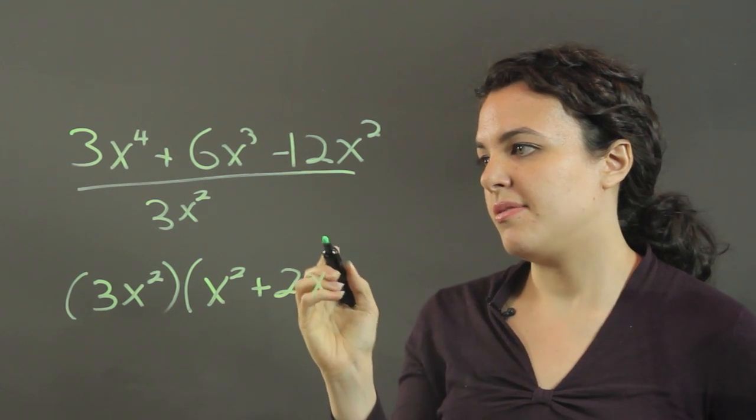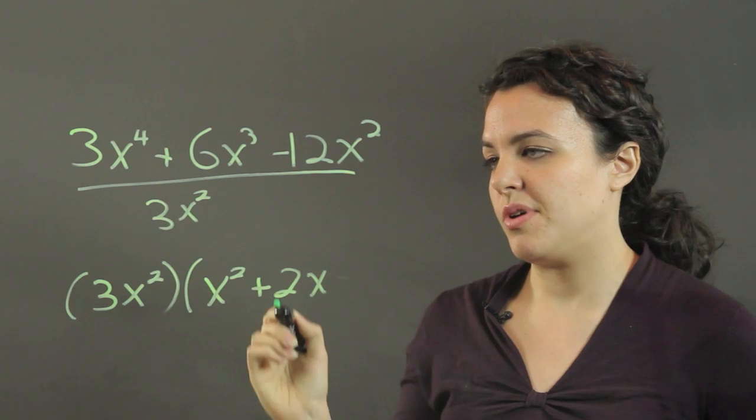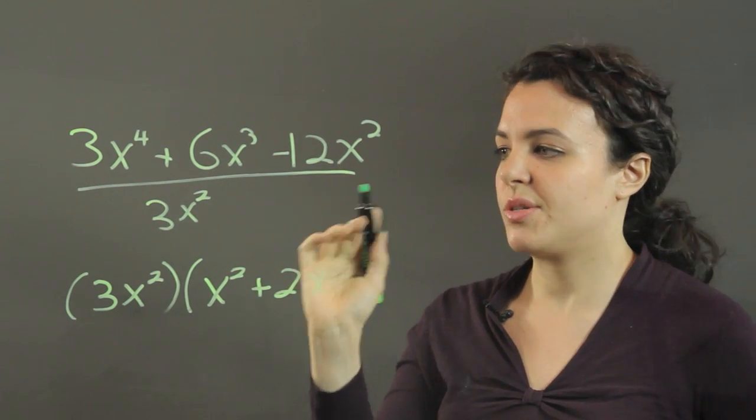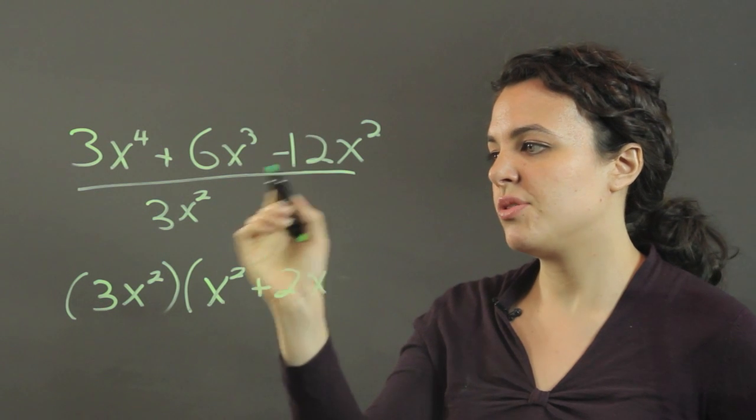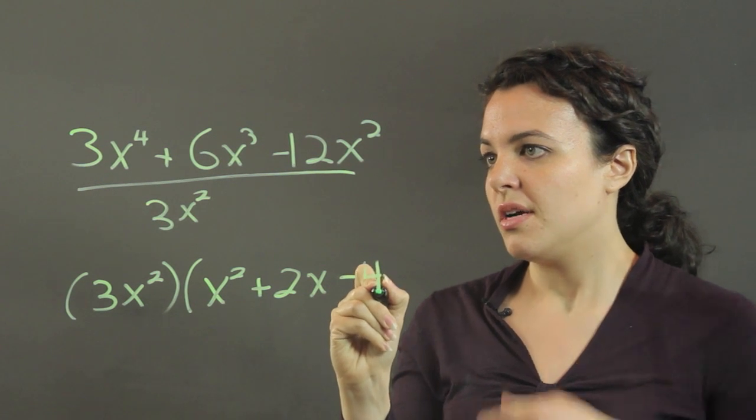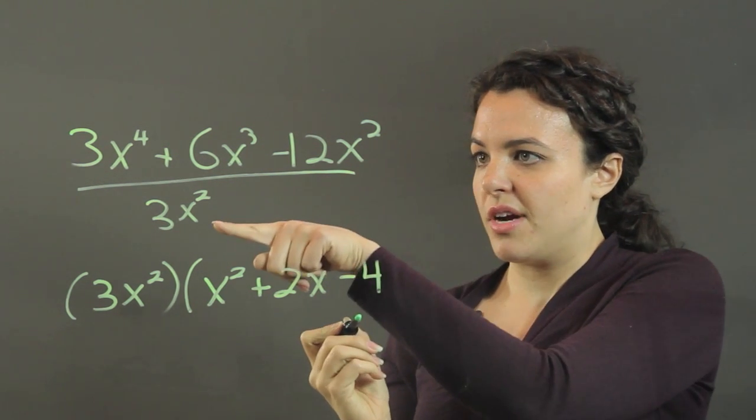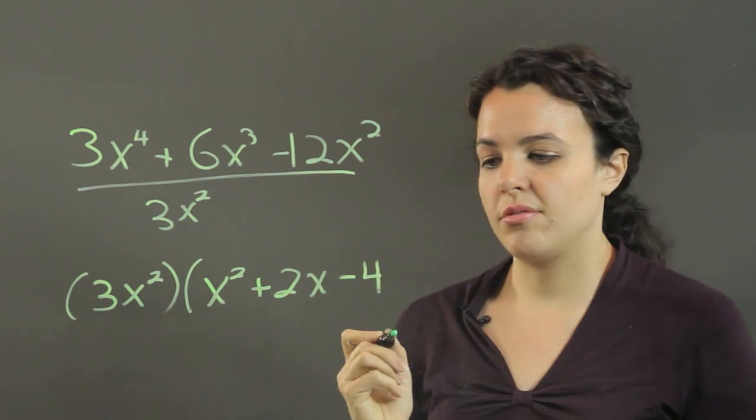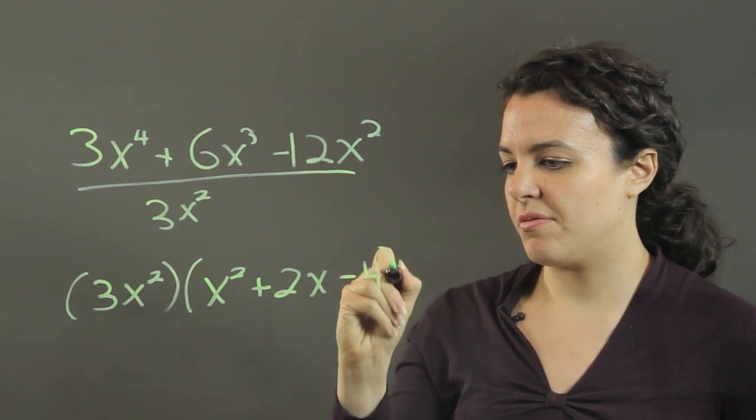And then I'm going to have negative 12 over 3. Negative 12x squared over 3x squared. But the negative 12 over 3 goes to negative 4, and x squared over x squared cancels out. So I just stop at the negative 4.